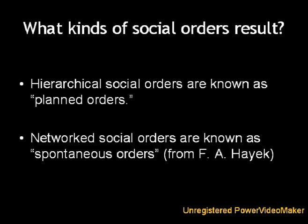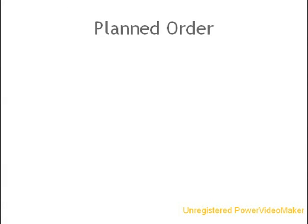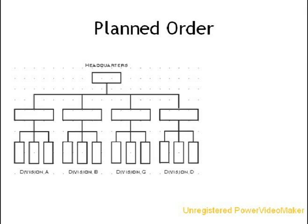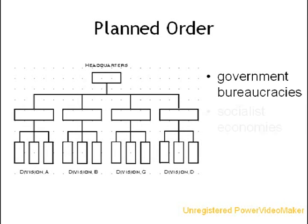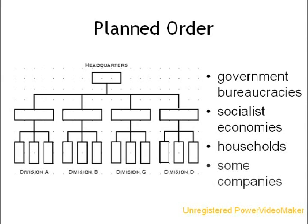Hierarchical social orders are known as planned orders, or centrally planned societies. Networked social orders are known as spontaneous orders, a term coined by Friedrich August von Hayek. Examples of planned social orders include government bureaucracies, socialist economies, some family households, and some companies. Each of these systems can vary in their relative ability to function well as hierarchies, but all are marked by their top-down command and control organization.